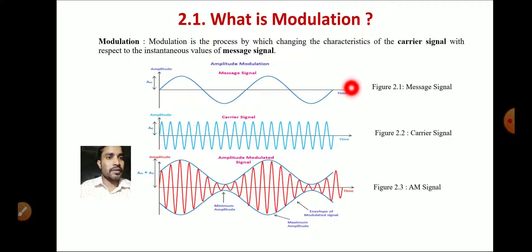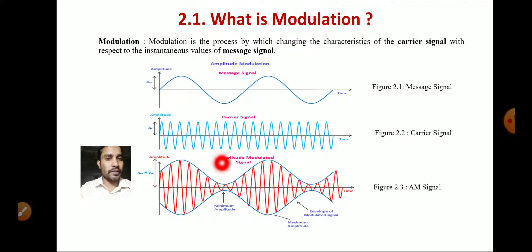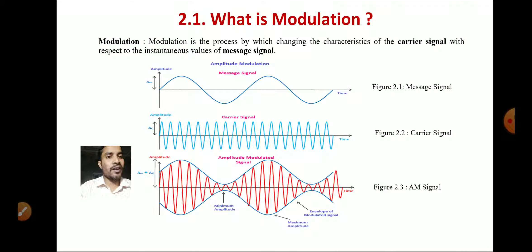Here, the first figure shows the message signal — a very low frequency signal. The second figure shows the carrier signal — a very high frequency signal. The third shows the amplitude modulated (AM) signal, where the characteristics of the high-frequency carrier signal are varied in accordance with the message signal. The high-frequency carrier signal is changed as per the requirement of the message signal.